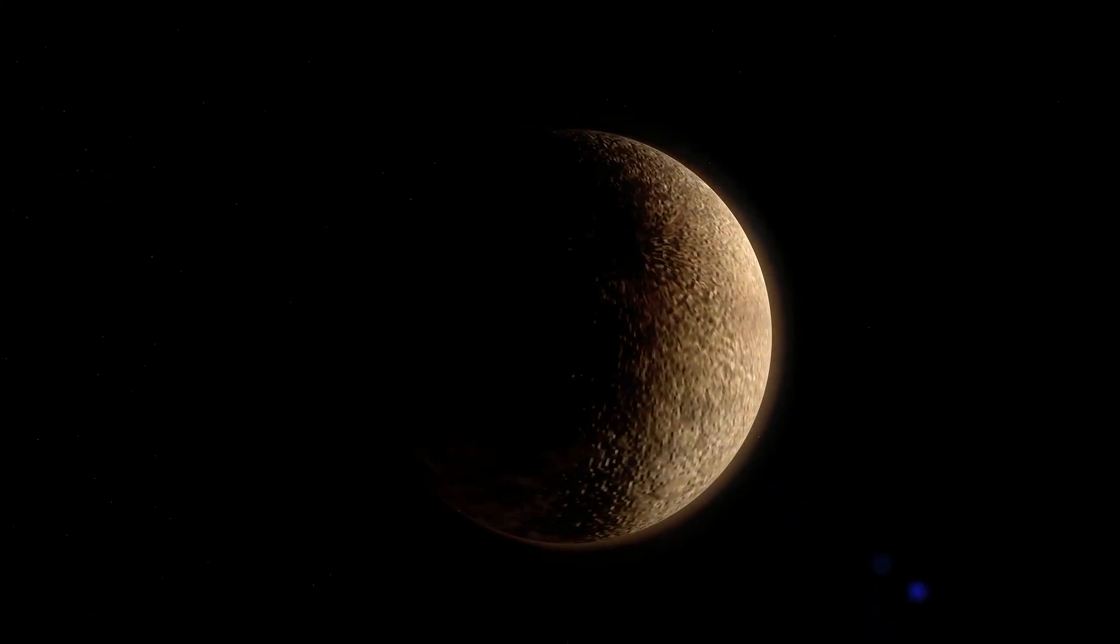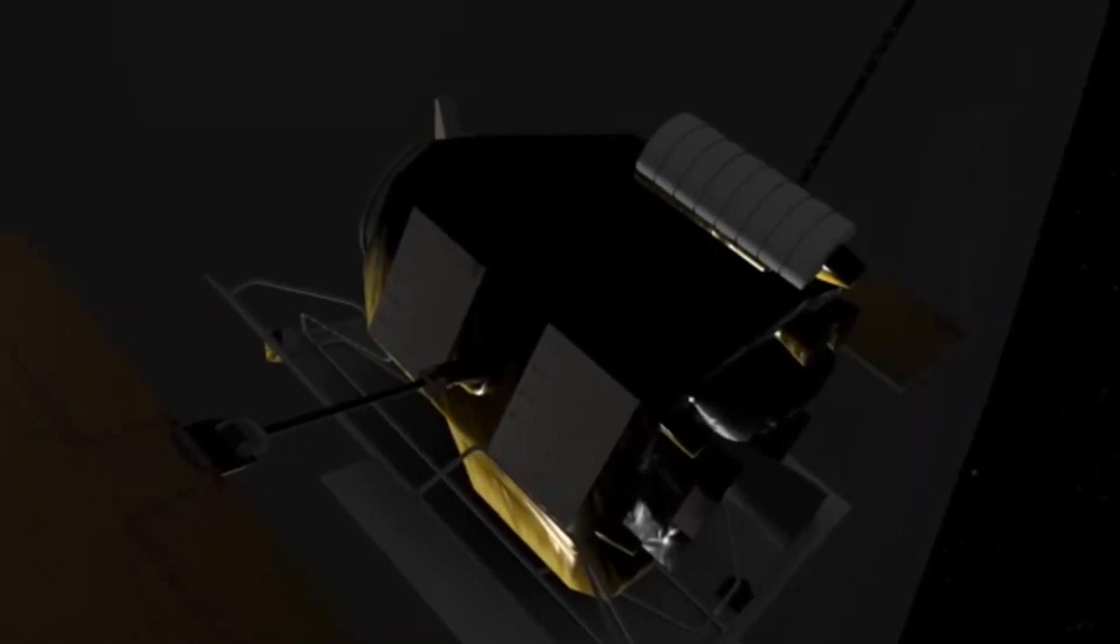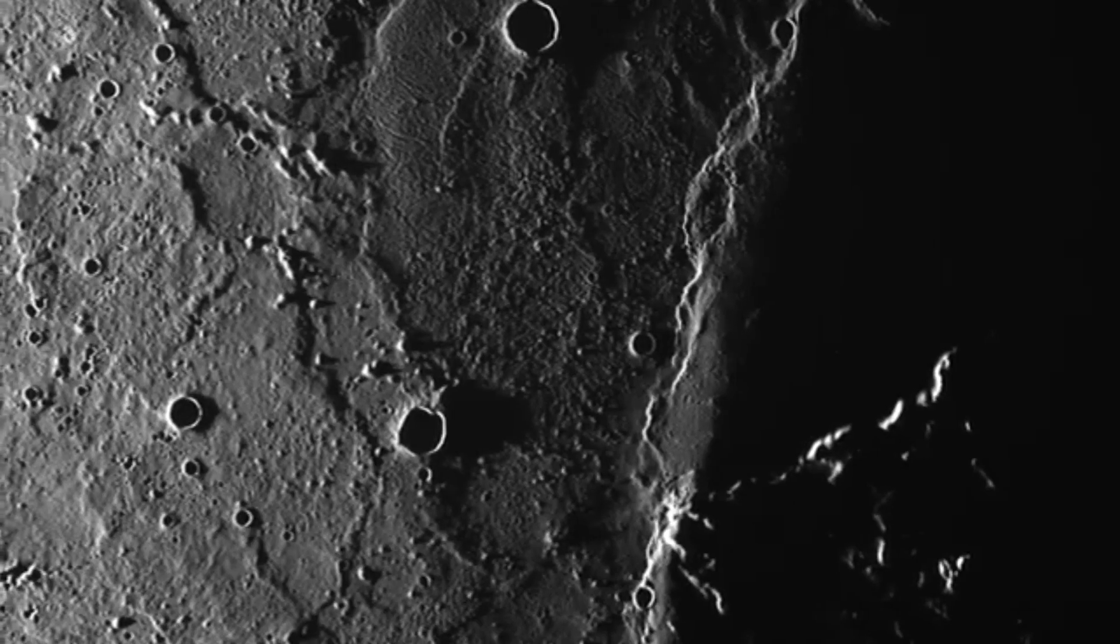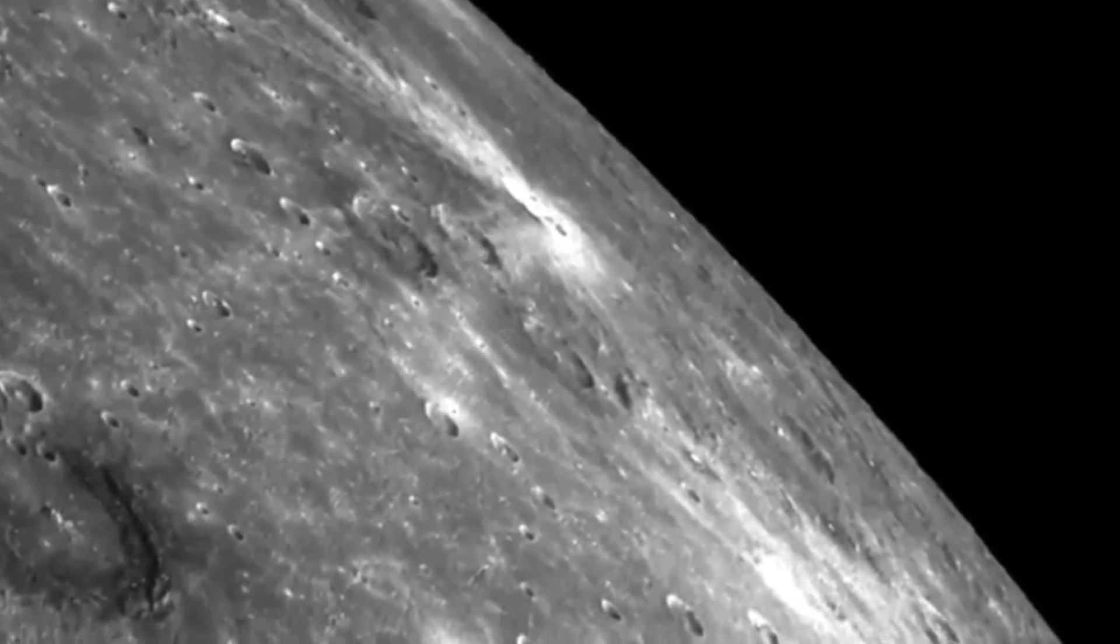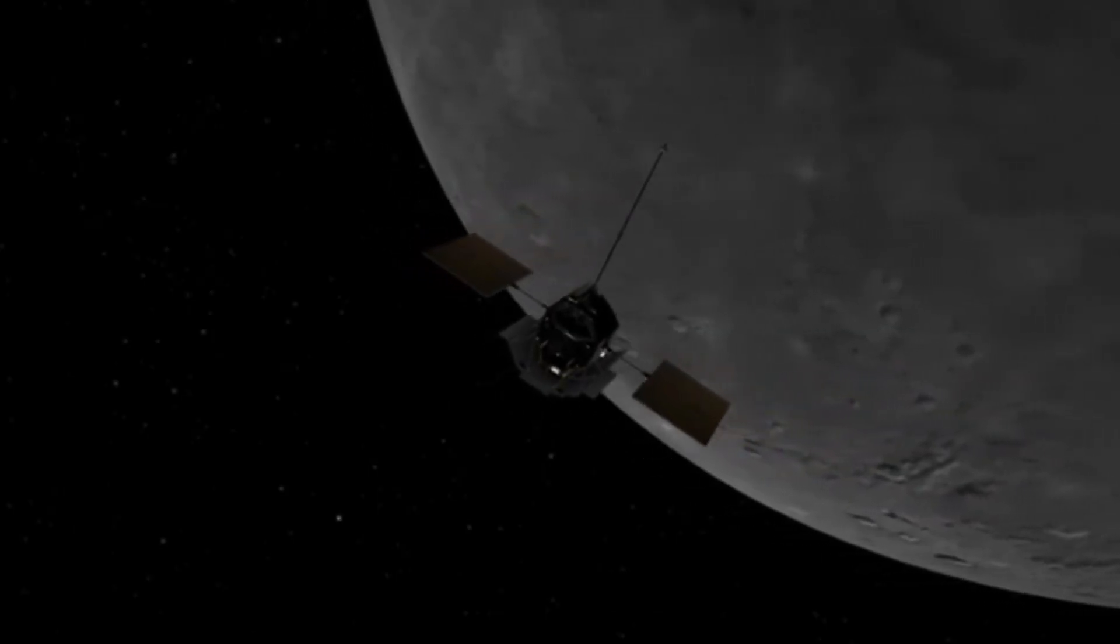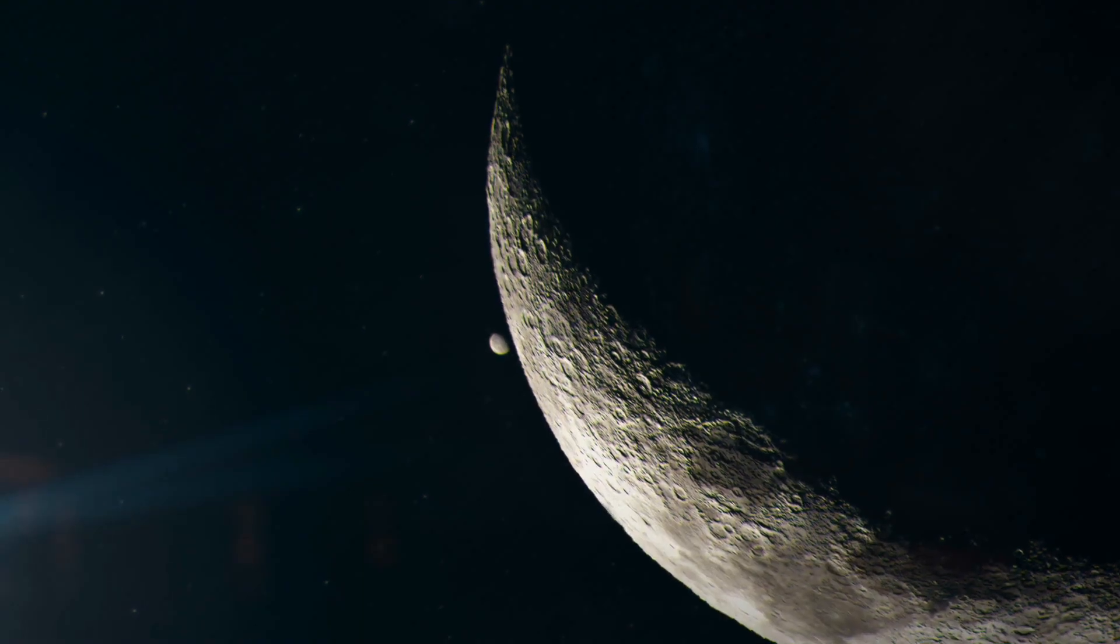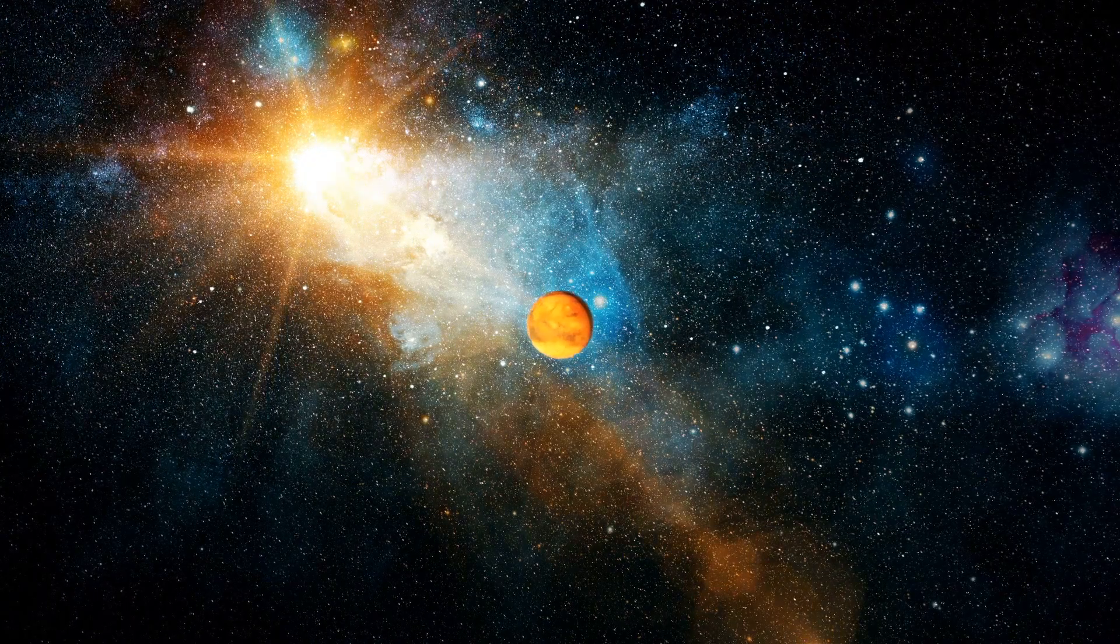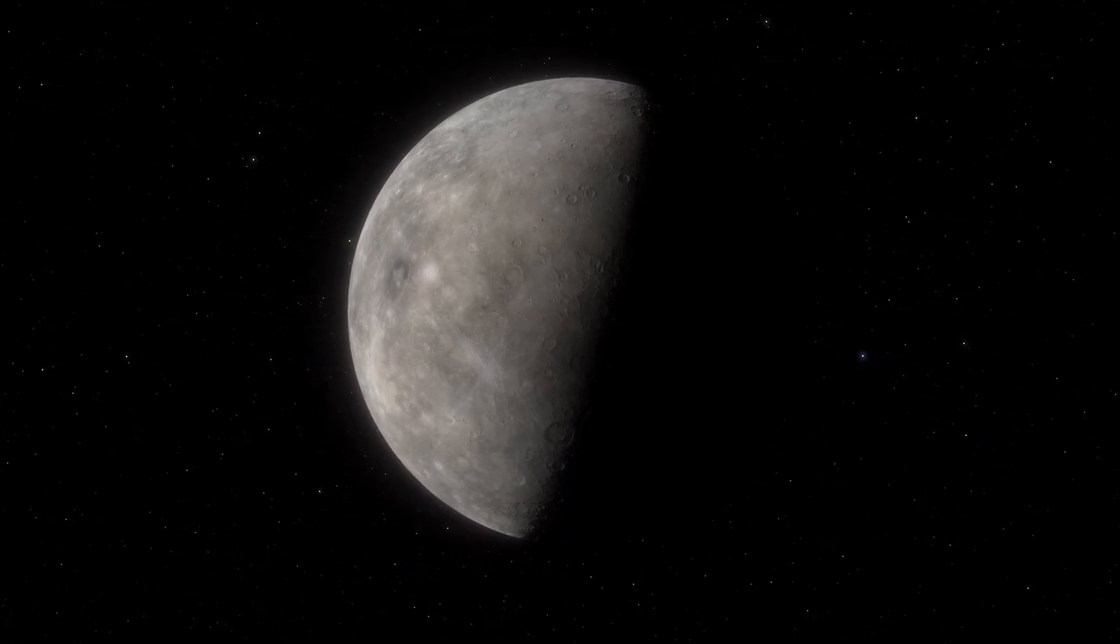Despite Mercury's harsh conditions, recent studies have revealed surprising features on its surface. In 2012, data from Messenger indicated that Mercury had experienced volcanic activity with evidence of pyroclastic deposits from explosive eruptions. Even more remarkable was the 2020 discovery of water ice within some of Mercury's polar craters. This finding has sparked questions about whether Mercury could potentially harbor simple extremophiles.